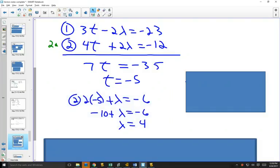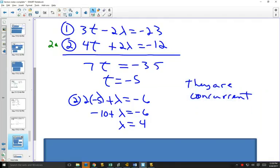Using that value of t, you can choose either equation one or two and plug in t. Here I chose equation two, plugged in -5 for t, solved for lambda, and got 4. Since we got a value for t and lambda that works, we know they're concurrent. In two dimensions, this is enough. In three dimensions, you always have to check the one equation you didn't use. You'll always be able to solve two of them, but you have to plug your t and lambda into that third one to make sure it also works.